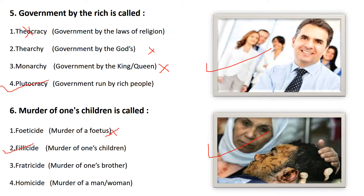The sixth is: the murder of one's children. Foeticide means the murder of a foetus — a child inside the belly of the mother killed before birth — that is not the answer. Filicide means murder of one's children — that is the right answer. Fratricide means murder of one's brother — not the answer. Homicide means murder of a man or woman — not the answer. Remember all these one-word substitutions.